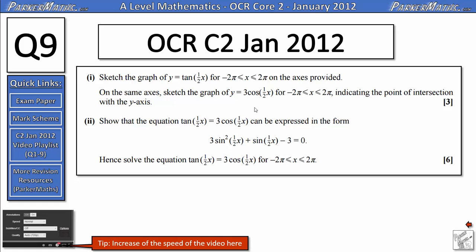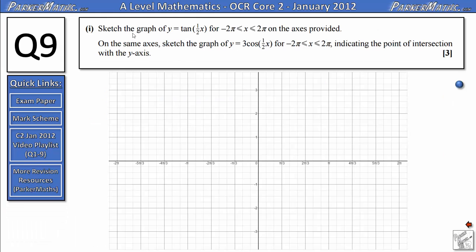Hi, I'm Mr. Parker, and this is question 9 on the OCR Core 2 paper from January 2012. In part 1, we need to sketch the graph of y = tan(x/2) for -2π ≤ x ≤ 2π on the axes provided. On the same axes, we then need to sketch the graph of y = 3cos(x/2) between the same values of x, indicating the points of intersection with the y-axis.